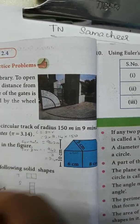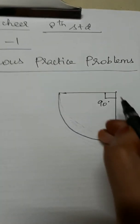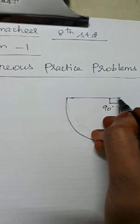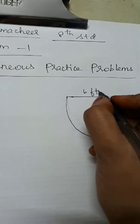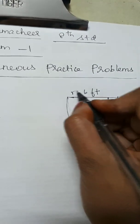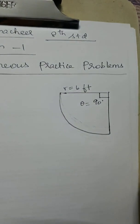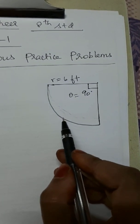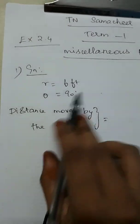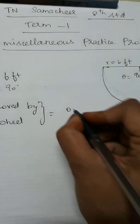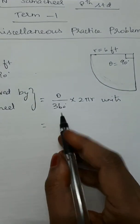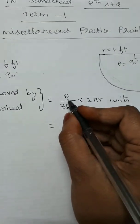We need to find the distance the wheel moves. In our diagram, the angle is 90 degrees, the wheel is fixed to the wall at 6 feet distance, so the radius of the quadrant is 6. Now the arc length formula applies: arc length = (90/360) × 2πr.